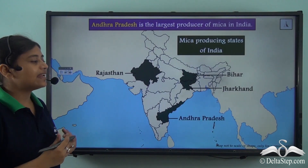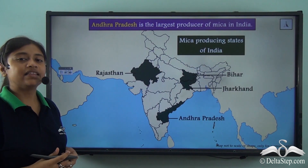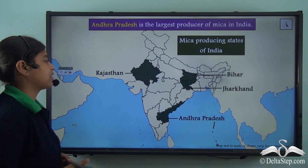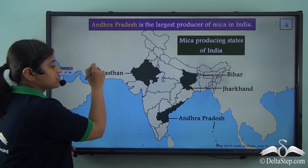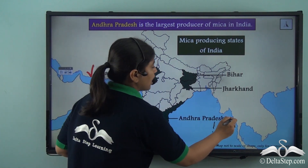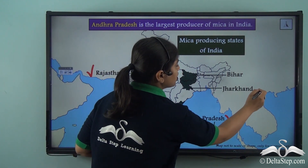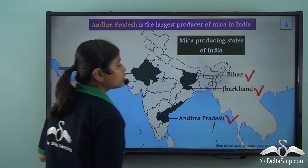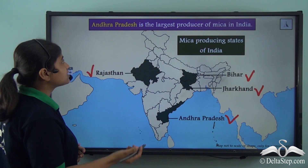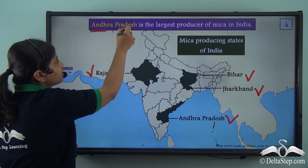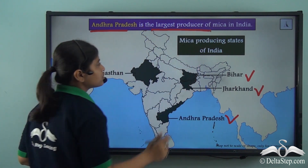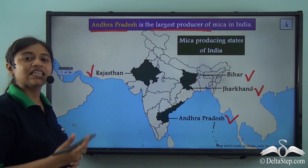In India, the leading producers of mica are Rajasthan, Andhra Pradesh, Jharkhand and Bihar. Out of all these states, Andhra Pradesh is the largest producer of mica in India.